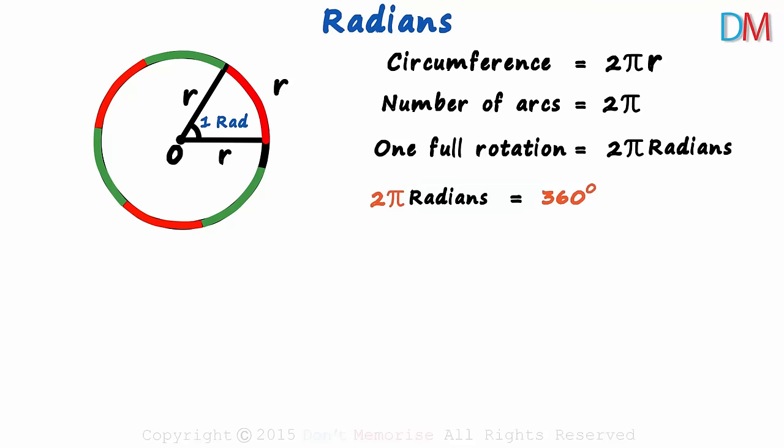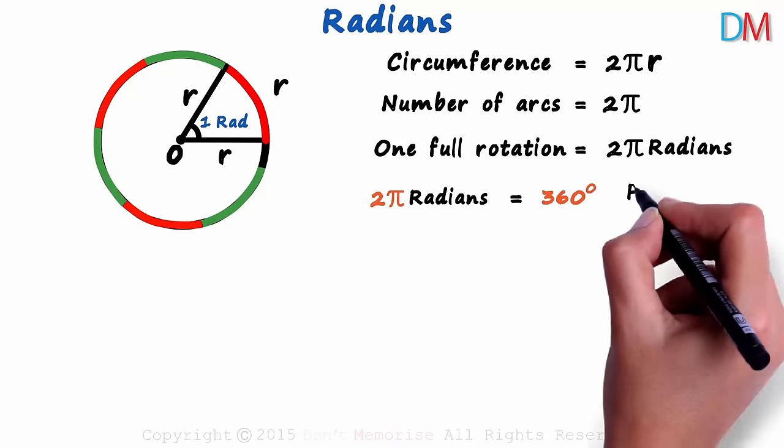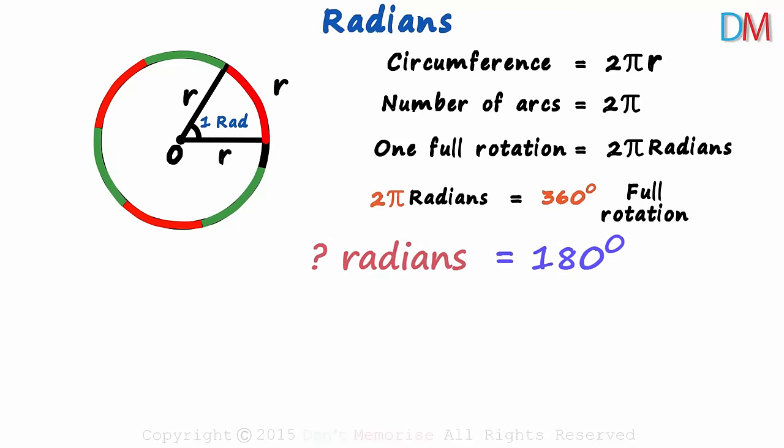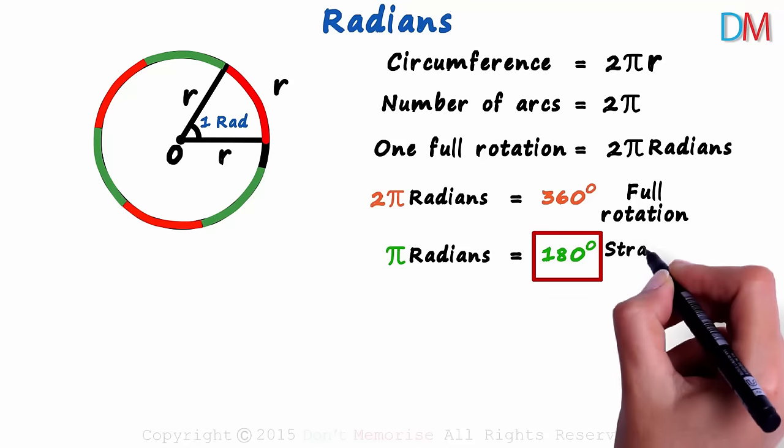This is what we have been working towards in this video. If we understand this, we can easily derive the rest. This is 1 full rotation. Then how many radians will 180 degrees be equal to? If we divide this equation by 2, we get π radians equal to 180 degrees. And 180 degrees is half circle or a straight line.